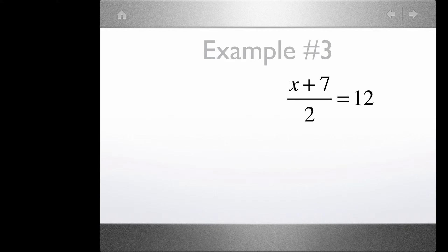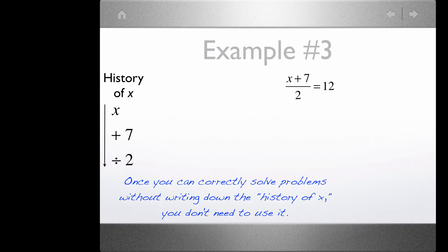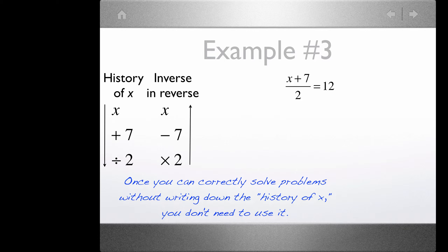In example number 3, we have what looks like a fraction on the left-hand side, but we can use the exact same method — the history of x. If we look at what happens to x: first we add 7, then divide the whole thing by 2, and get 12. The inverse in reverse is multiplying by 2, then subtracting 7, and then we get x.